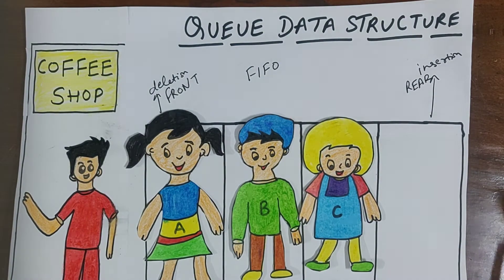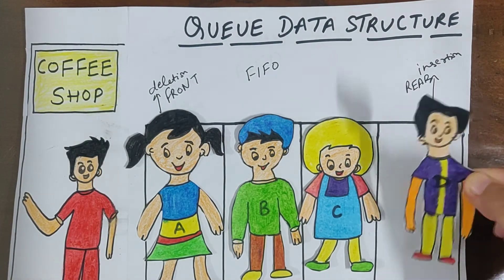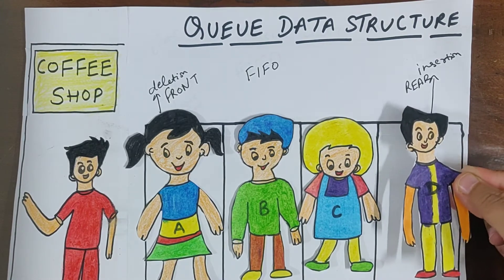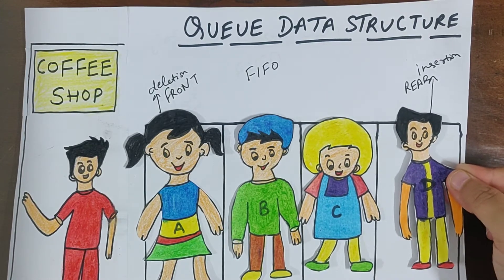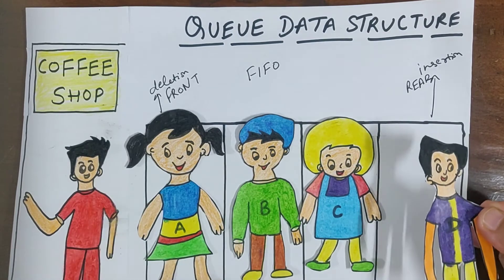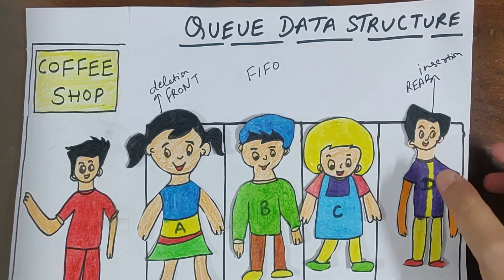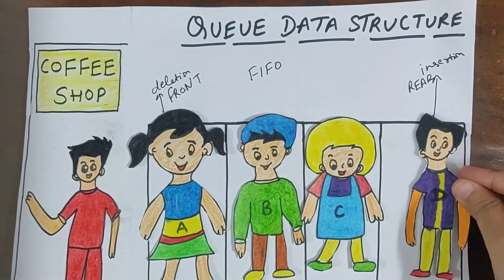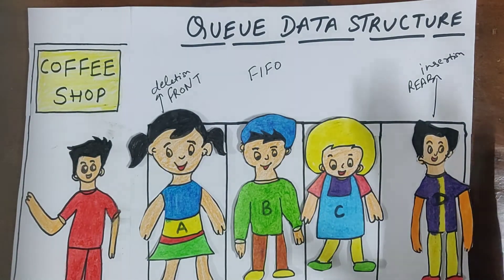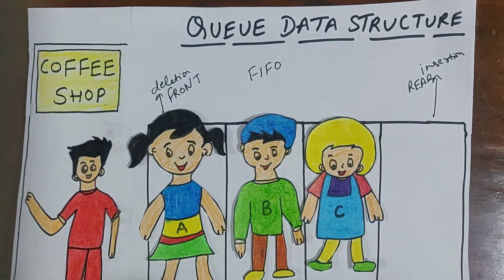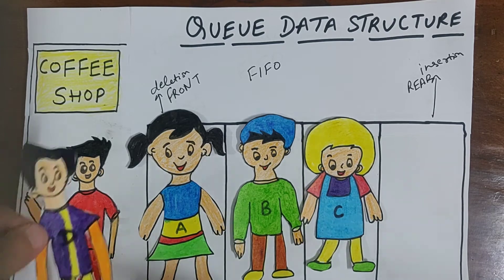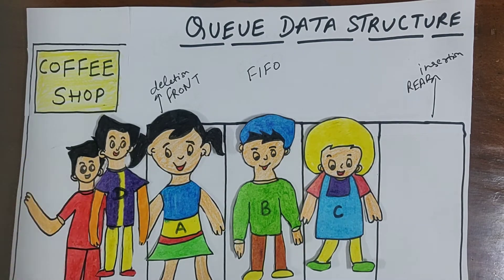Now suppose D comes. D is a VIP. So obviously a VIP can't stand at the last even if he comes late. As a VIP, he has to stand in the front. So this is all about priority queue — every data is assigned a priority and the data having higher priority stands in the front of the queue.